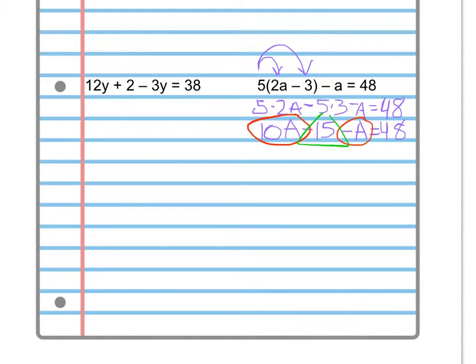Well, 5 times 2 is 10 times a is 10a. So I get 10a minus 15 minus a, and that's equal to 48. And then I need to combine terms that are similar. So I have my 10a and my minus a, and then I have just a constant of 15. I can combine the red circles. So 10a and minus a is 9a.